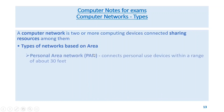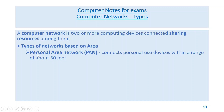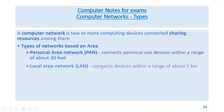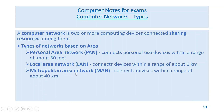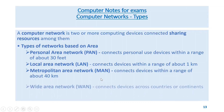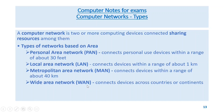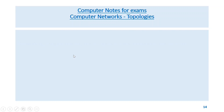A computer network is two or more computing devices connected and sharing resources among them. Types of networks based on area: personal area network (PAN) connects personal use devices within a range of about 30 feet; local area network (LAN) connects devices within about one kilometer; metropolitan area network (MAN) connects devices within about 40 kilometers; wide area network (WAN) connects devices across countries or continents.